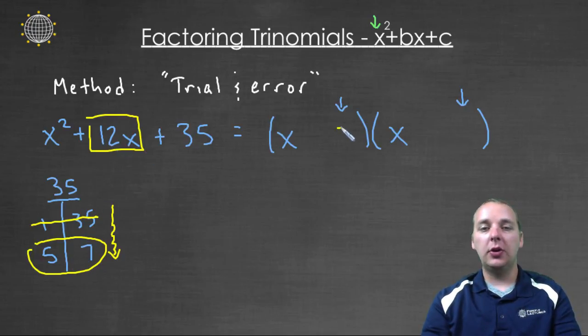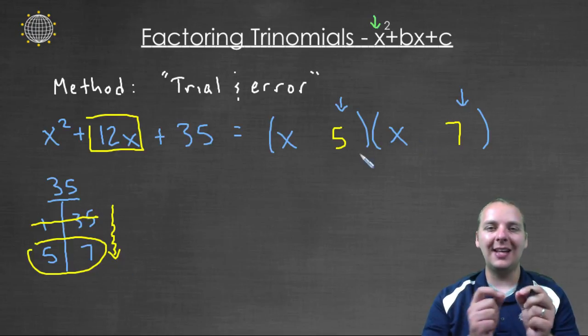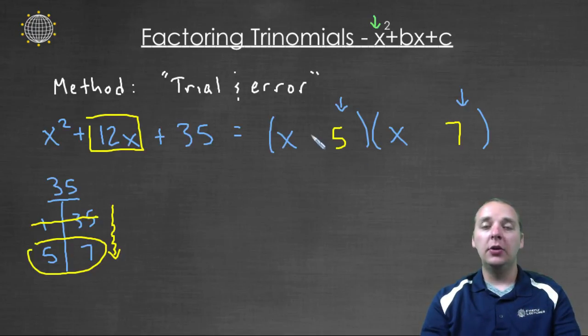So what I'm going to do is I'm going to try a five and a seven, and again I'm doing trial and error, I'm looking at all these different pairs. And then I'm going to see now if I can fit the signs, a plus or a minus, or something like that, in such a way that it will give me this polynomial if I foiled these two guys.